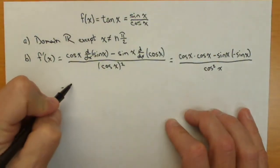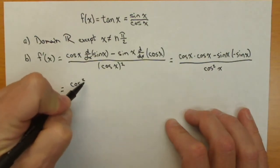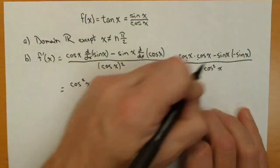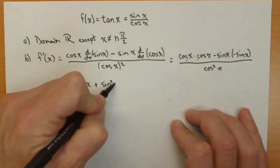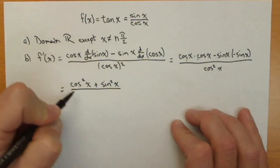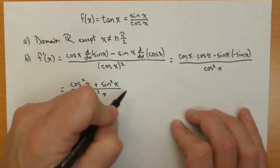Now, notice what's going to happen on top. I've got a cosine squared of x, multiplying these two together, and a negative times a negative will give me plus sine squared of x, all over cosine squared of x.